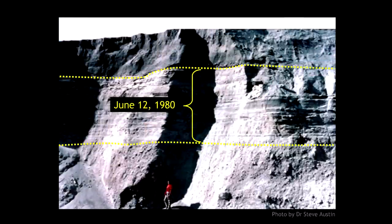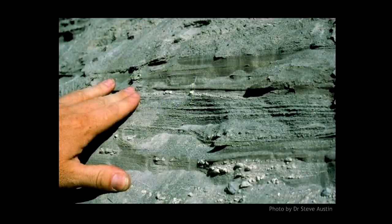Looking at the canyon's side walls, you see a layer between the yellow dotted lines that was laid down in about three hours — as a result of a volcanic eruption. A close-up view shows fine layering just millimeters thick. A reasonable view suggests those layers were laid down maybe one or two layers per year, like at river mouths, implying hundreds of thousands of years to form. That's eminently reasonable — but it's wrong.